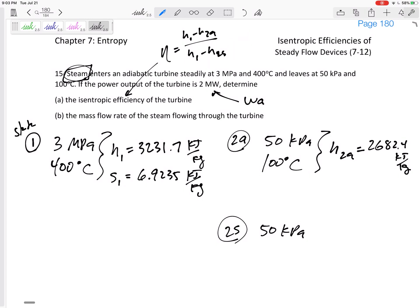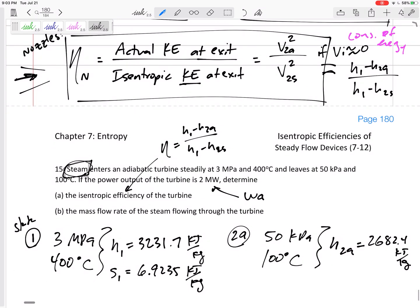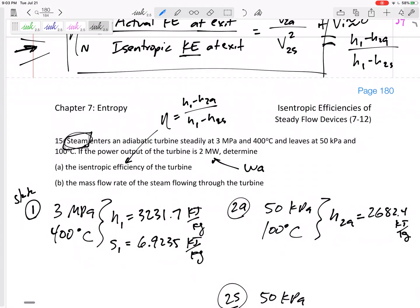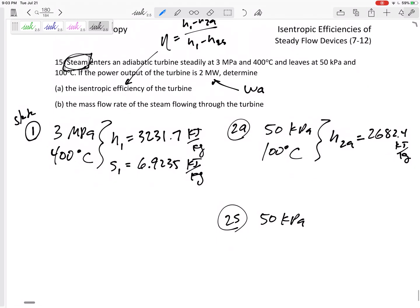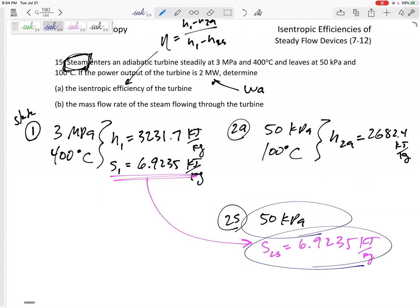All right, so how do we get this h2s? First of all, this is steam. Everything we did back for ideal gases we're not going to do. This is not an ideal gas. Don't use ideal gas equations. Don't use relative pressure or relative volume. Don't use those, don't use the equations for ideal gases if it's steam or refrigerant. But how can I connect state one to state two? You probably already did this and already saw this. It is isentropic. So the entropy that we read off right there is the entropy here.